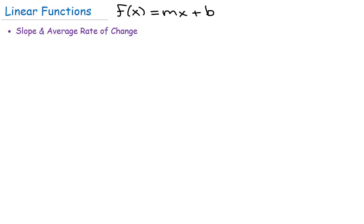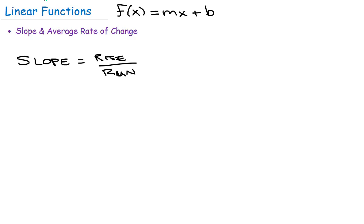A lot of real-life situations can be modeled using linear functions. Before we get into some examples, let's talk more specifically about the slope and the slope formula — how you can find the slope if you don't already know what m is. It's basically the rate of change between two points, or if you think about rising and running as you travel on the graph of the function.